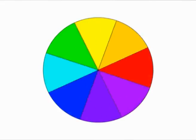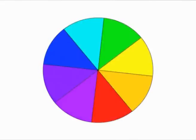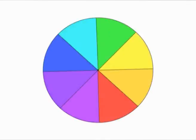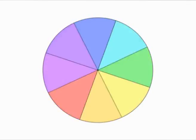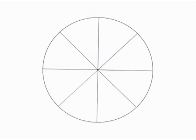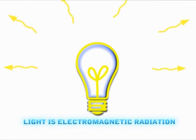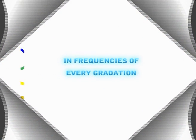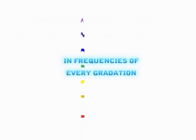If you take a spectrum of multicolored light and spin it round and round, you get the color white. Light is electromagnetic radiation in frequencies of every gradation.